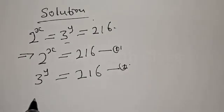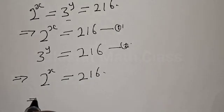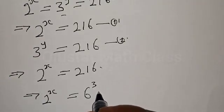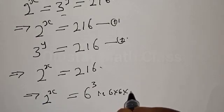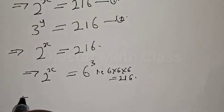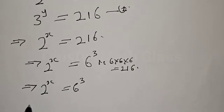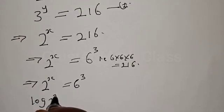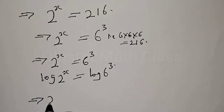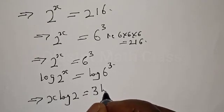From equation 1, this implies that 2 raised to power s equals 216, which is 6 raised to power 3, because 6 times 6 times 6 is equal to 216. Then let's take the log of both sides: log of 2 raised to power s equals log of 6 raised to power 3. This implies that s log 2 equals 3 log 6.